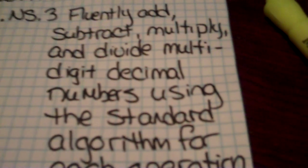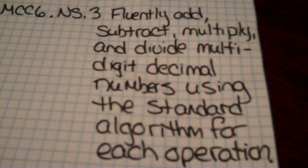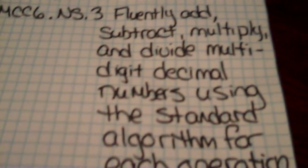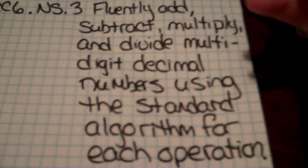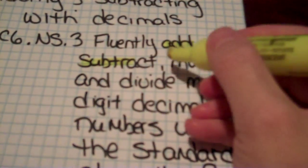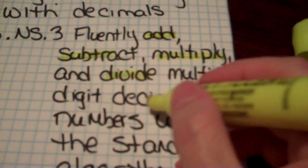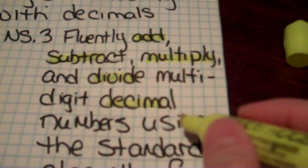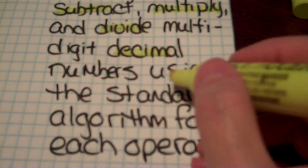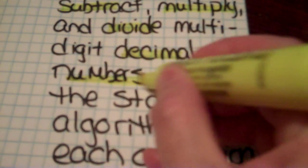Now I've asked you to do an I can statement. So I'm going to walk you through an I can statement here. Let's look at the important things in the standard. It says we're going to add, so I'm going to highlight add, subtract, multiply and divide decimal numbers. And then that should be it.